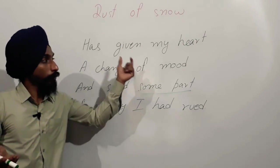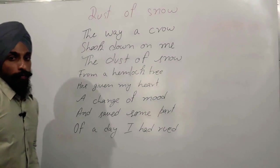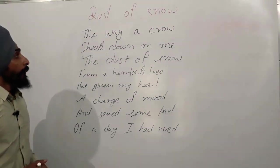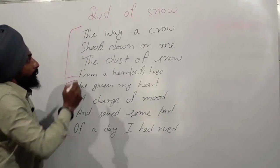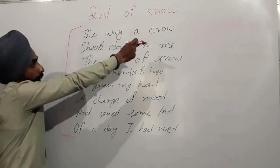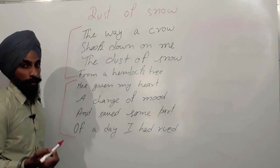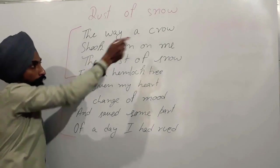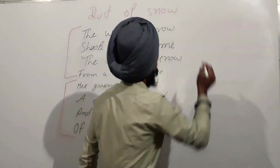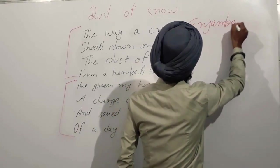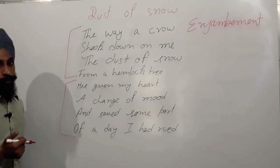Now let's talk about the literary devices which are used in this poem. The way a crow shook down on me the dust of snow from a hemlock tree. Let's look at the rhyme scheme of the first stanza.